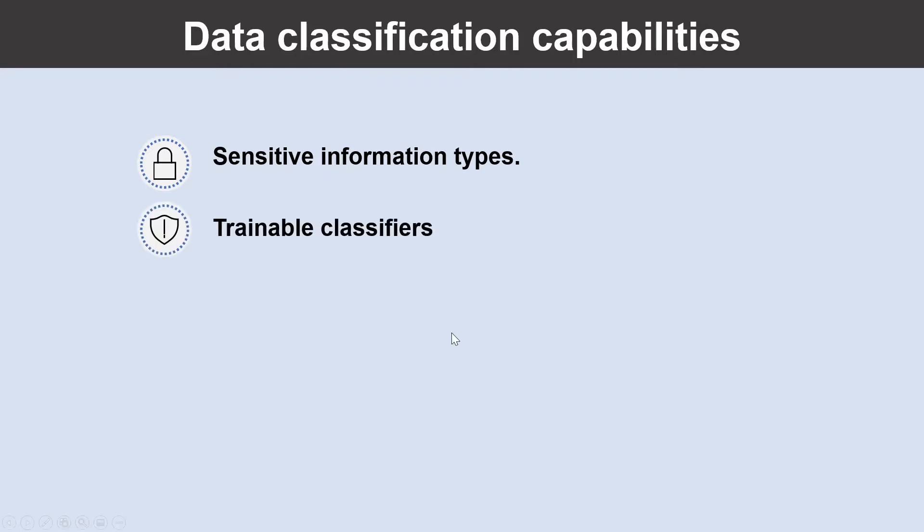Some examples include credit card numbers, passport or identification numbers, bank account numbers, health service numbers, etc. The next one is trainable classifiers. Trainable classifiers use artificial intelligence and machine learning to intelligently classify your data. There are two types of classifiers: pre-trained classifiers and custom trainable classifiers.